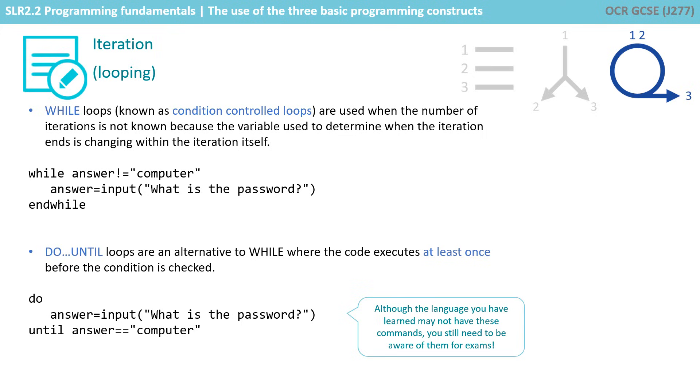Here we see while answer is not equal to computer, run this line of code. Answer equals input, 'what is the password?' We don't know how many times that line of code needs to be executed. Every time round the while loop, it will say while answer is not equal to computer. As long as it's false, as long as it's not equal to computer, it will carry on running that loop again and again.